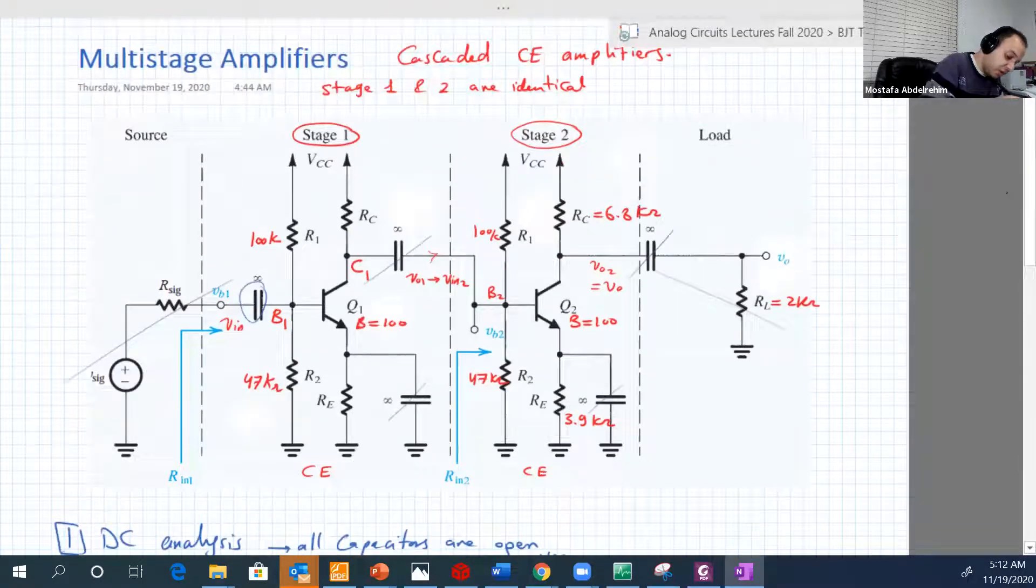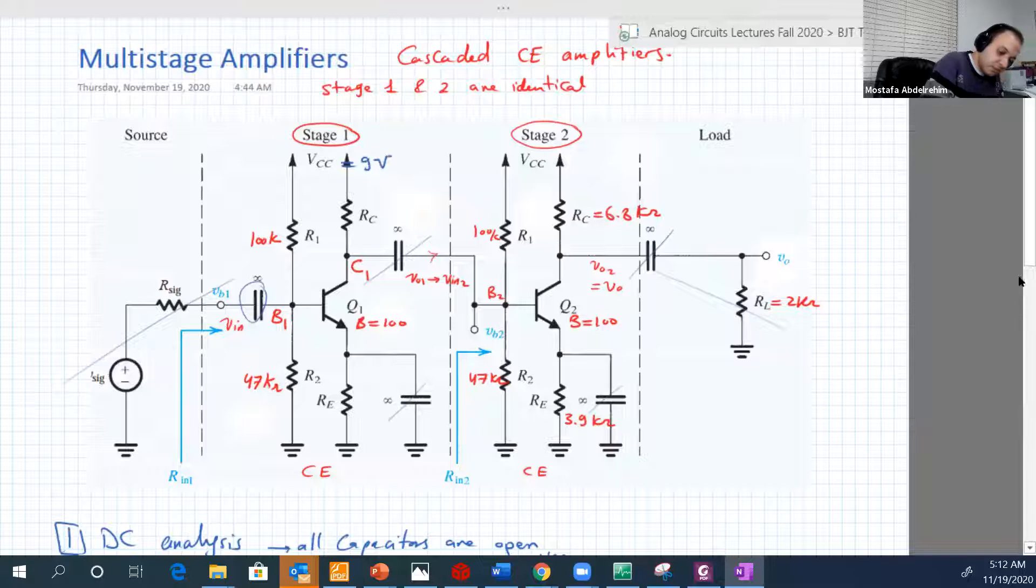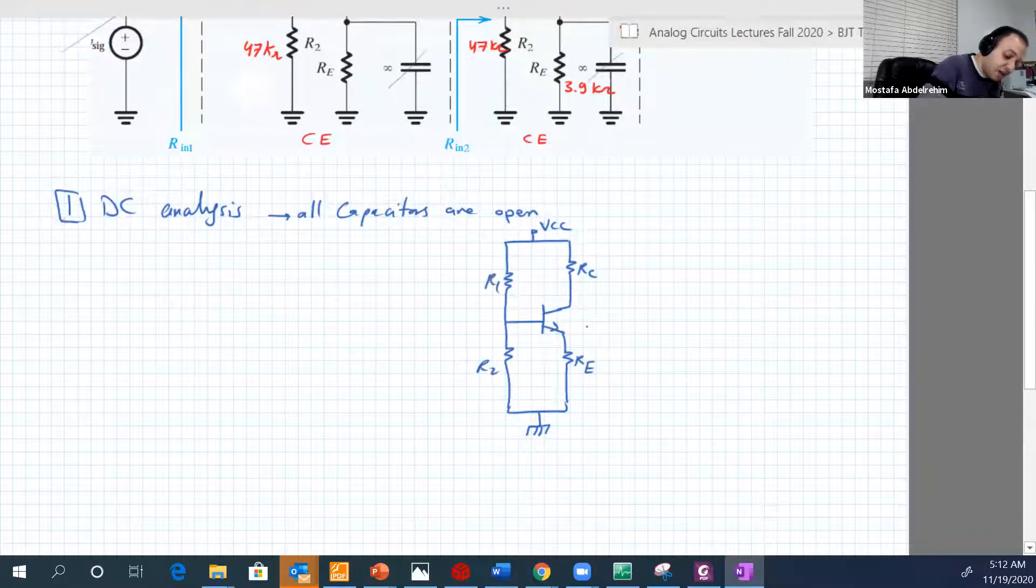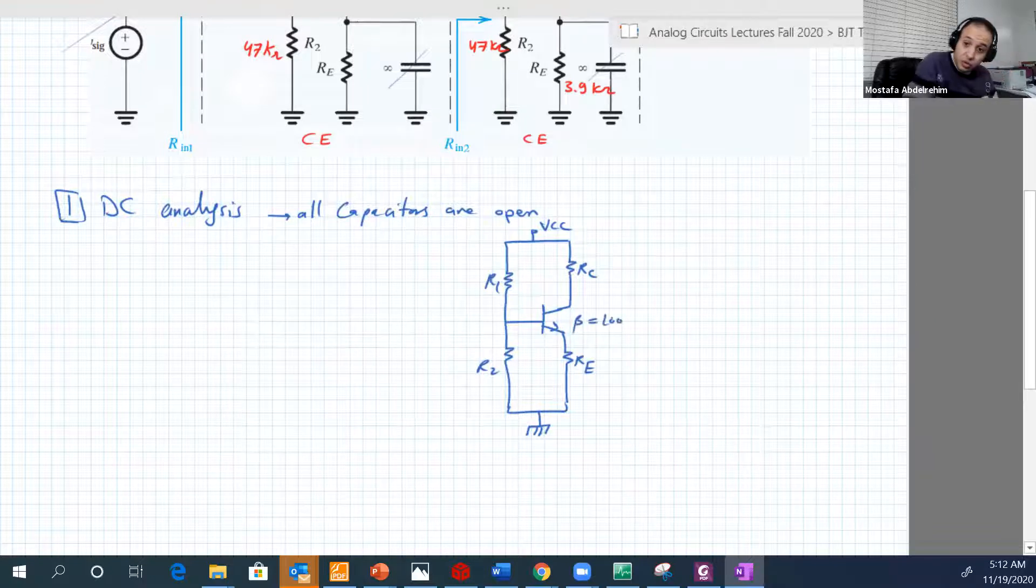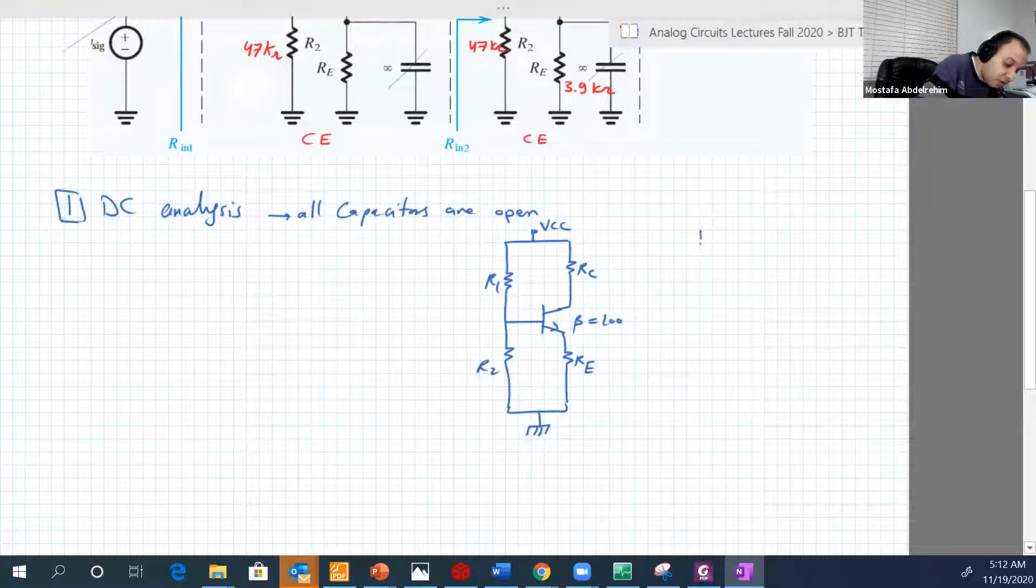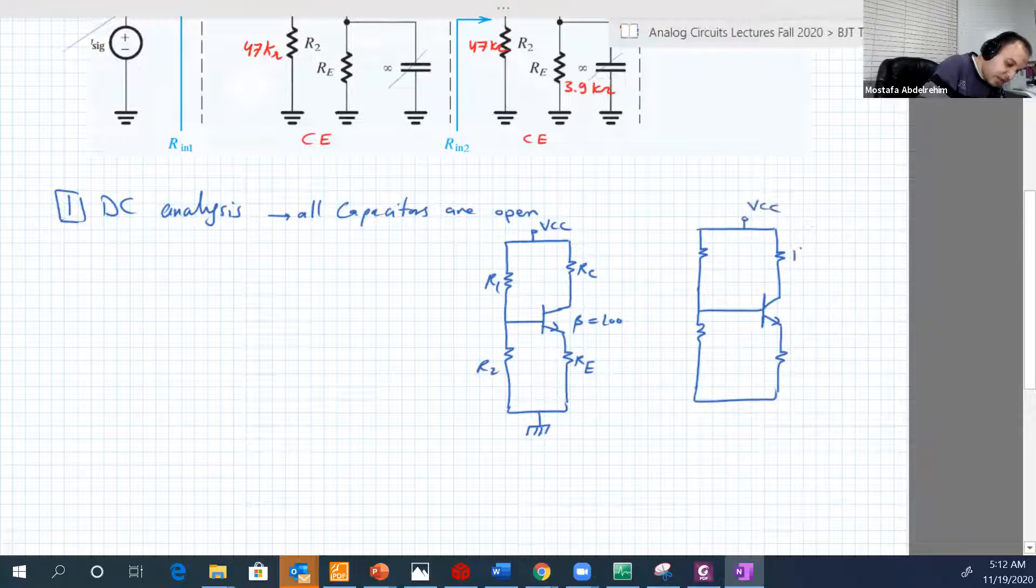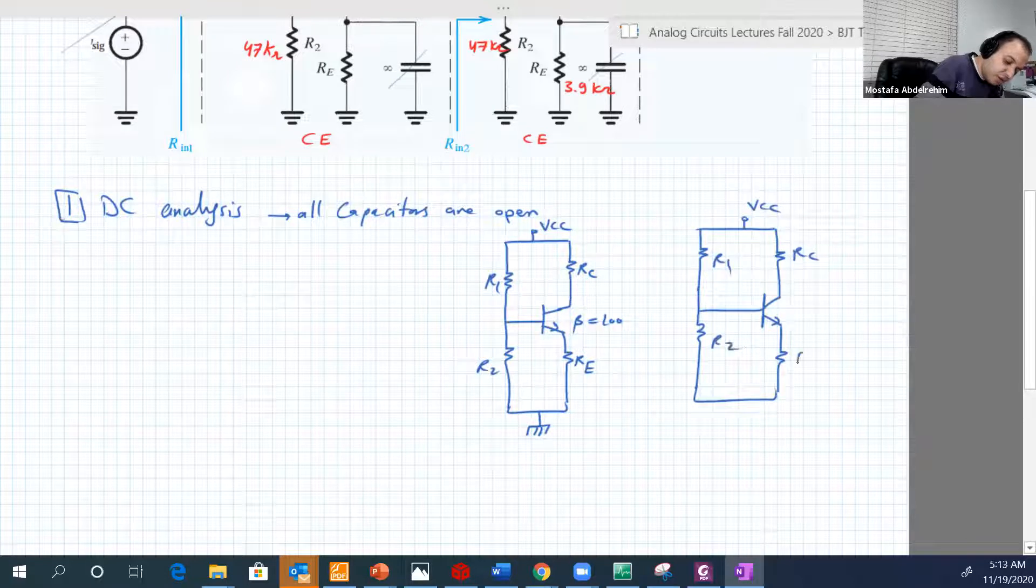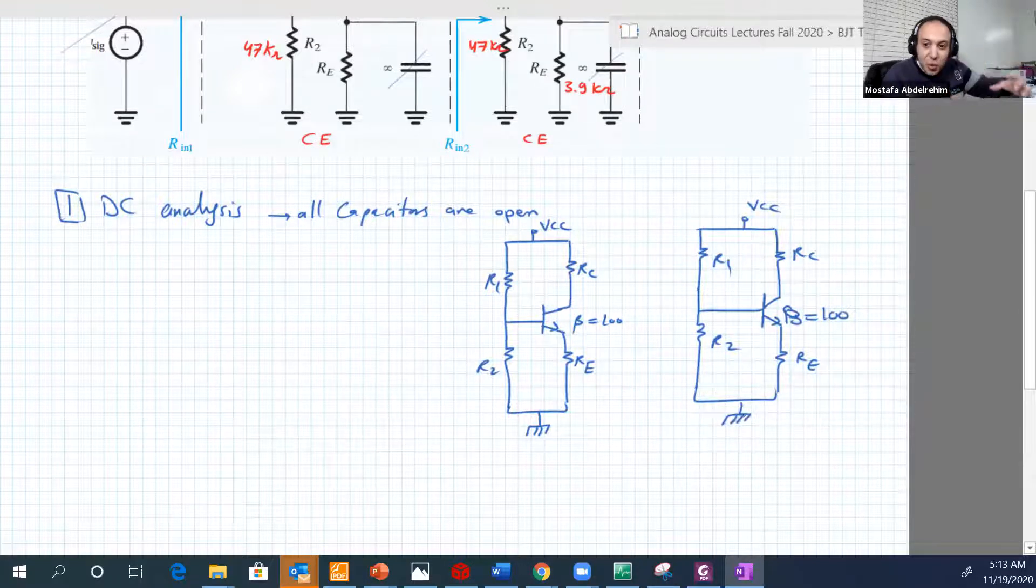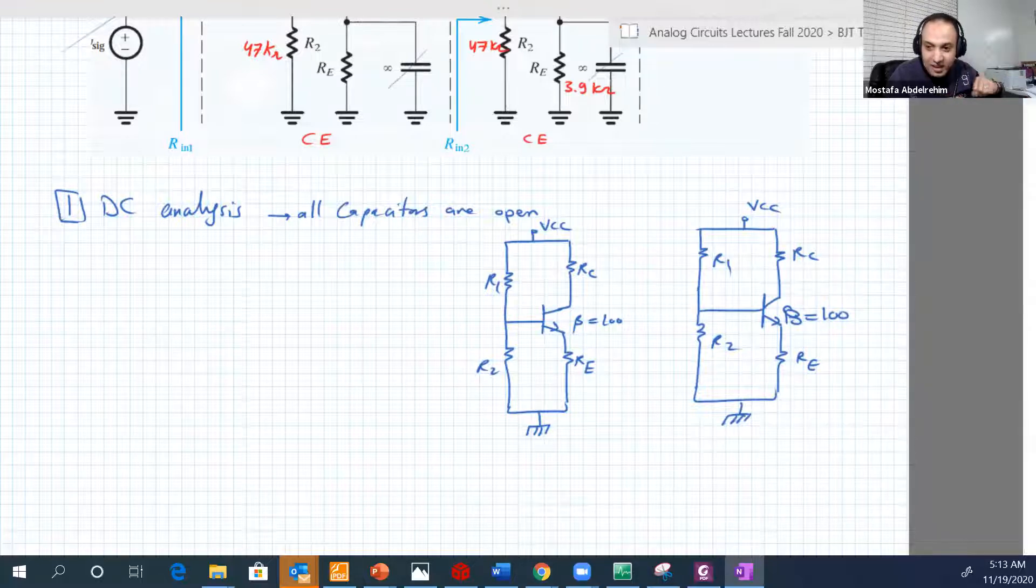VCC by ZO is equal to 9 volts. I forgot this. And here is RC, RE, R2, R1. And remember, the circuit, the two circuits, two stages are identical. And then we will not draw the capacitor in between because it's open. So we have another circuit. Again, RC, R1, R2, RE, and same transistor with the same beta equal to 100. So we end up with two identical circuits, and they are of course isolated in DC.